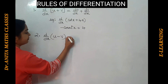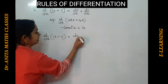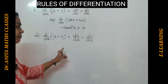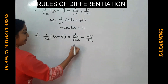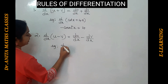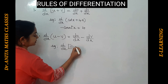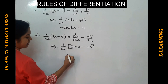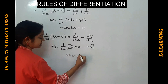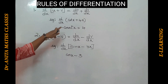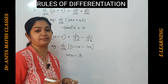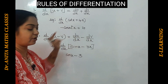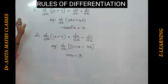Now the difference rule: when functions u and v are subtracted, the same pattern applies. For n number of functions we differentiate each one. For example, d/dx of sin x minus 3x: d/dx of sin x is cos x, minus d/dx of 3x is just 3. The constant comes out. Here I am using the standard formulae which were discussed in the previous video.